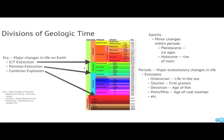Within eras, you have smaller things called periods. Periods are generally divided based upon big trends in life during particular eras of time. And then we can further break down periods into what we call epochs, and then stages and ages and so on. But these are the four divisions of geologic time. The big thing is that eons are the biggest, eras are the next biggest, followed by periods, and then epochs.